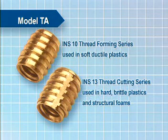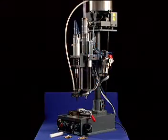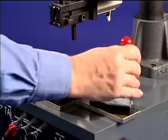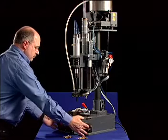The thread forming inserts are used in soft ductile plastics and the thread cutting inserts are used in hard brittle plastics and structural foams. To operate this machine, the operator loads the host part into a part holding device and activates the machine.